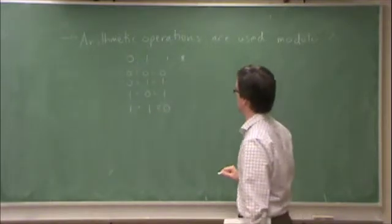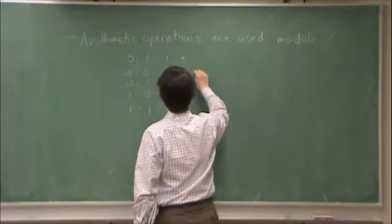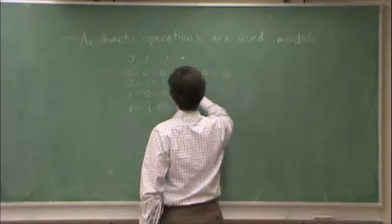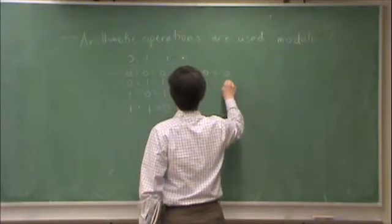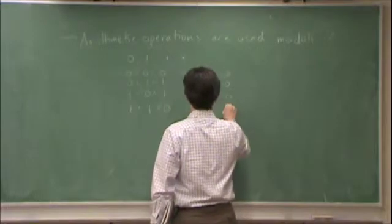Similarly, multiplication works the way you would expect. We use dot instead of star. 0 times 0 is 0, 0 times 1 is 0, 1 times 0 is 0, and 1 times 1 is 1.